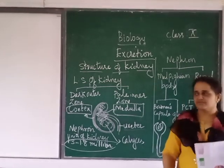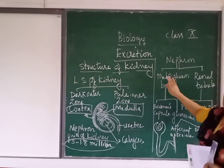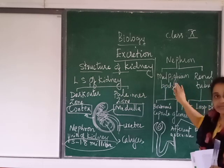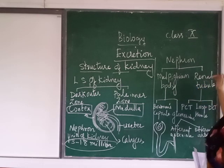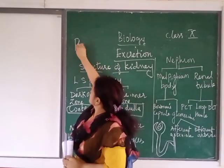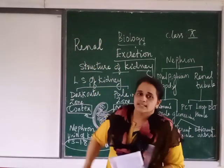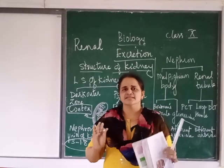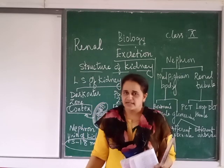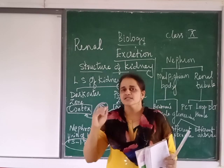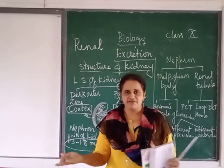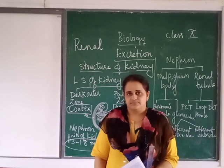Each nephron has two main parts. The first part is called the Malpighian body or Malpighian capsule. The second part is called the renal tubule. Whenever you hear the term 'renal', remember it is related to the kidney — just as 'cardiac' or 'cardiology' is related to the heart, and 'pulmonary' is related to the lungs. Renal failure means kidney failure.